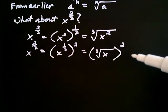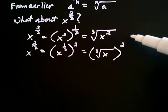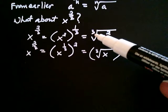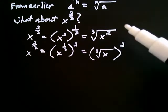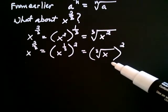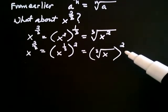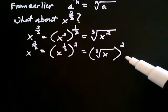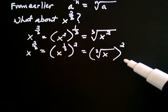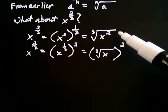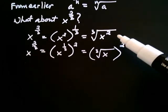Do you see the difference between these two expressions? In the first one, I've taken x and squared it, and then took the third root of that. In the bottom one, I first took the third root, and then I squared. So I've basically reordered the operations — here I took a root first and then squared, and here I first squared and then took a root.